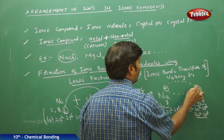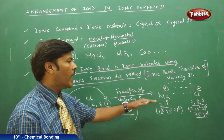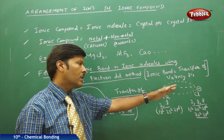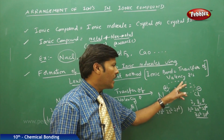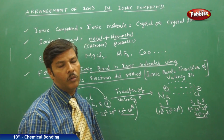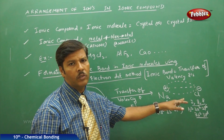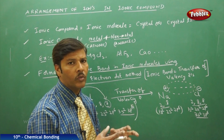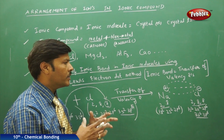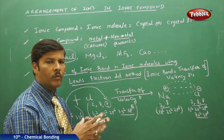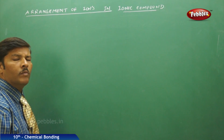A strong electrostatic force of attraction operates between the Na⁺ ion and the Cl⁻ ion. The ionic bond is defined as the strong electrostatic force of attraction which binds two oppositely charged ions in a molecule. There is no physical bond between the two oppositely charged ions; the cations and anions simply come very close to each other and the electrostatic force of attraction holds them intact as individual ionic species.